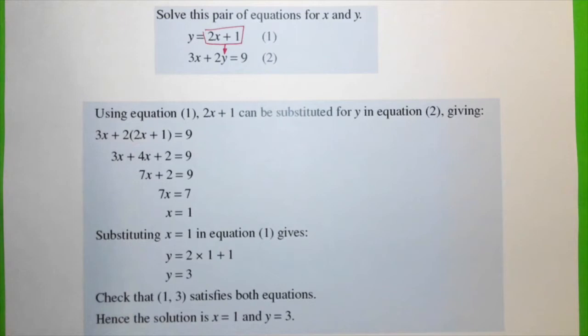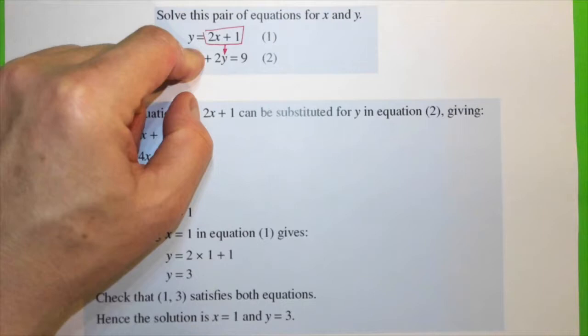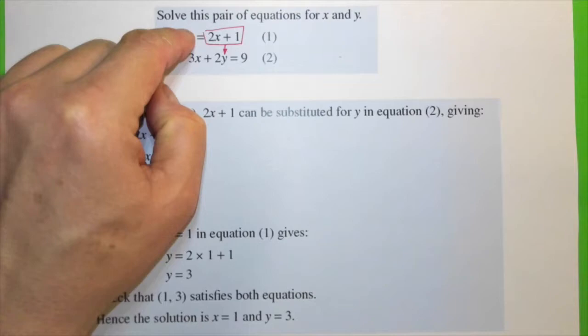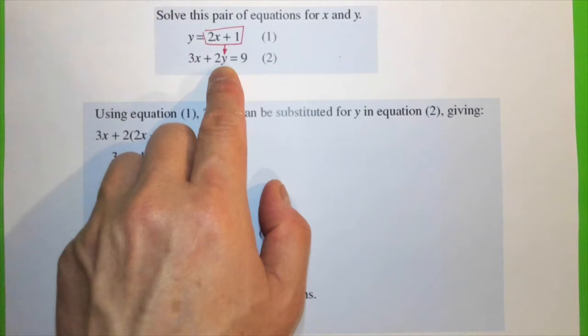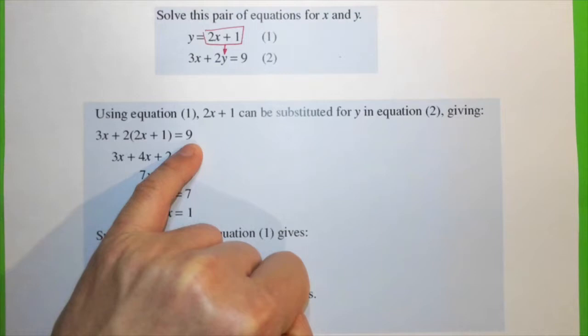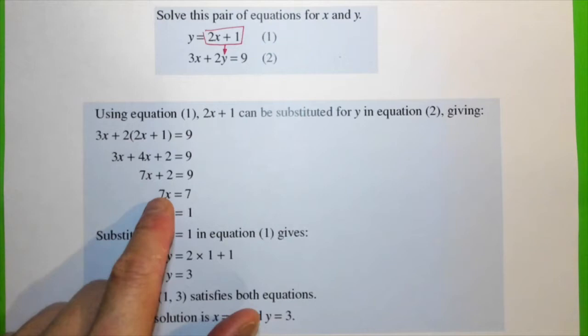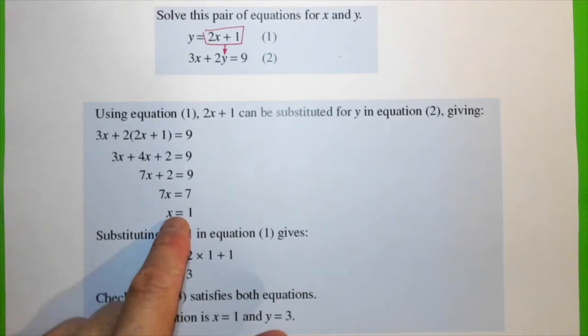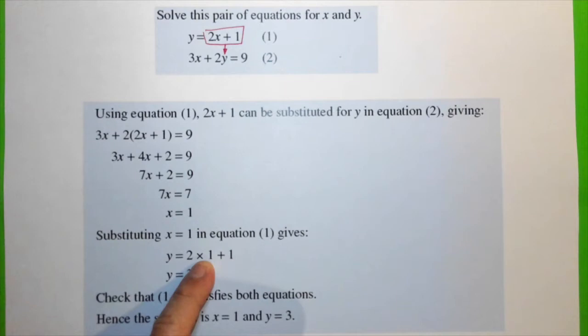Another example: y equals 2x plus 1 and 3x plus 2y equals 9. We know that when equation 1 and equation 2 meet, y is the same for both equations. We can substitute y equals 2x plus 1 from equation 1 into equation 2, giving us 3x plus 2 times (2x plus 1) equals 9. Solving this by expanding the bracket and collecting like terms, we get x equals 1. Substituting x equals 1 into equation 1, y equals 2 times 1 plus 1, therefore y equals 3.